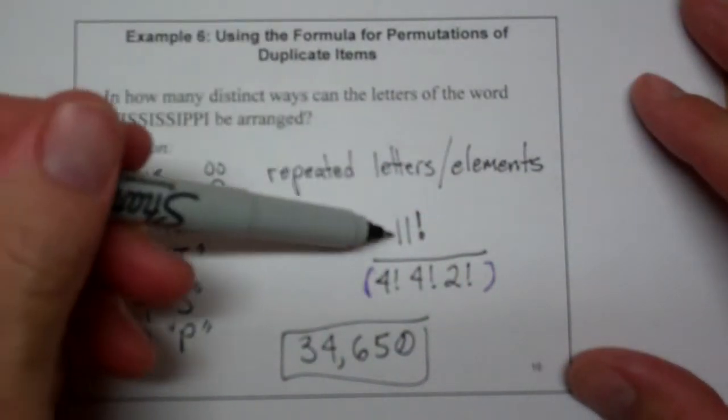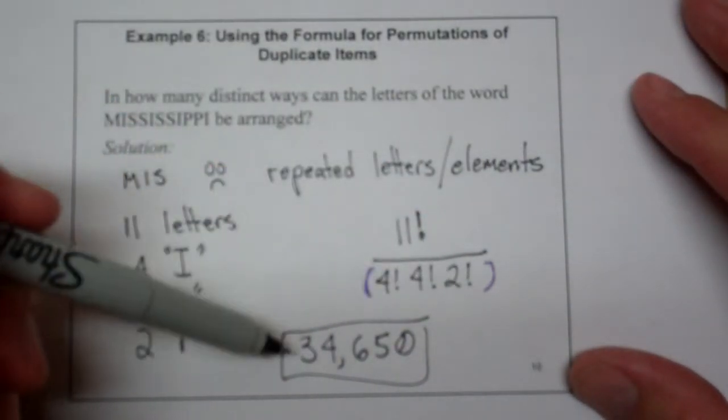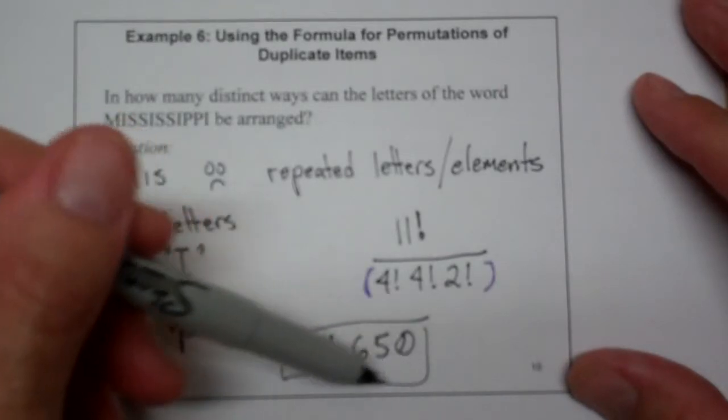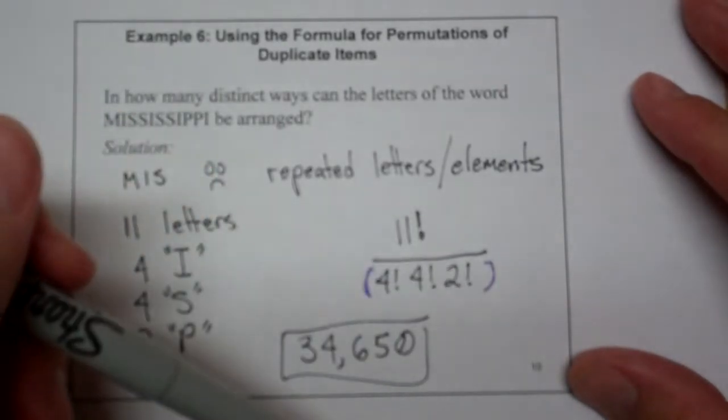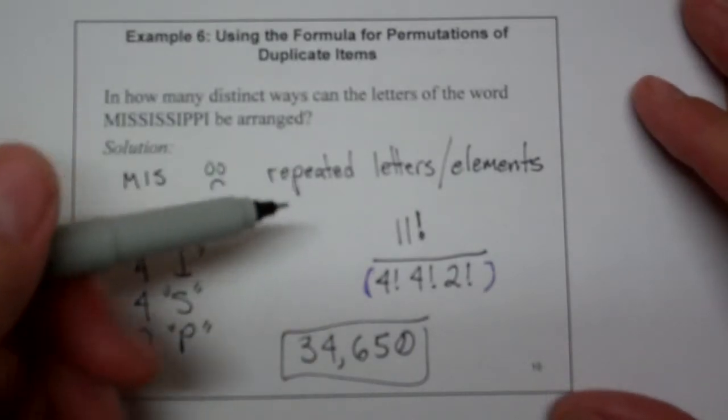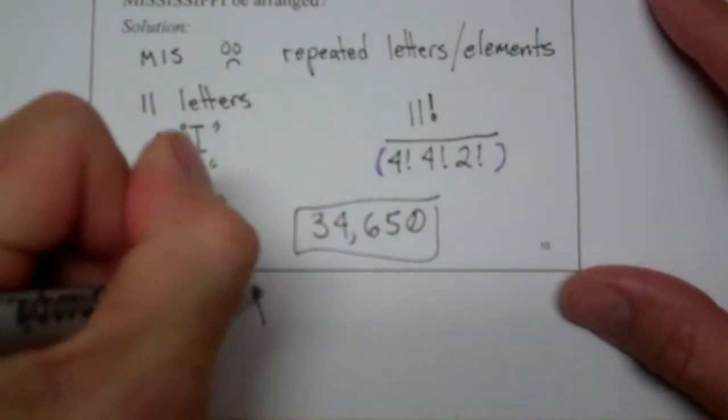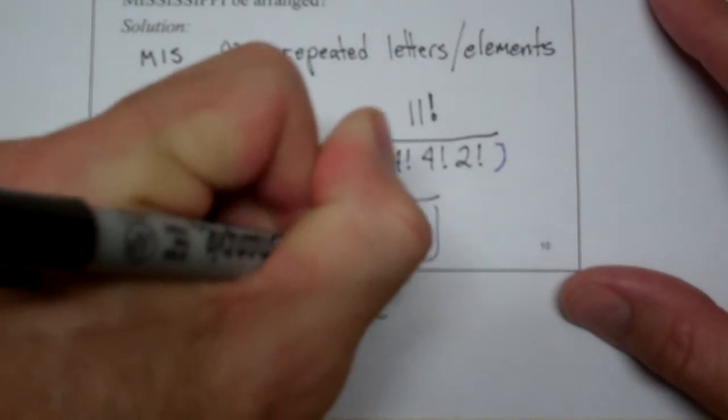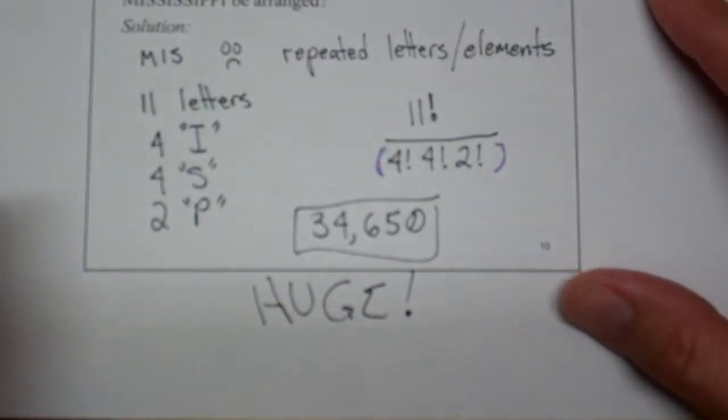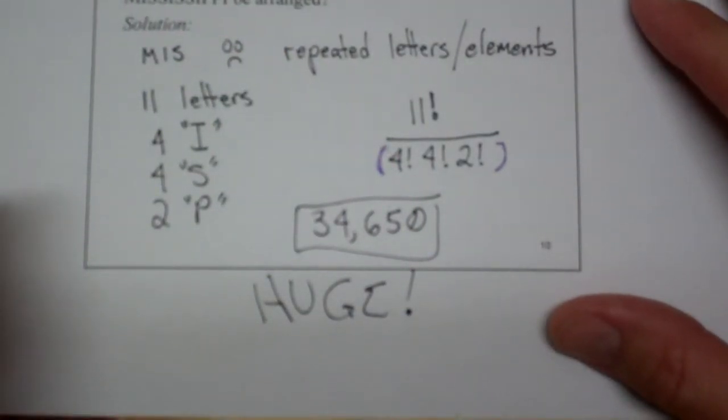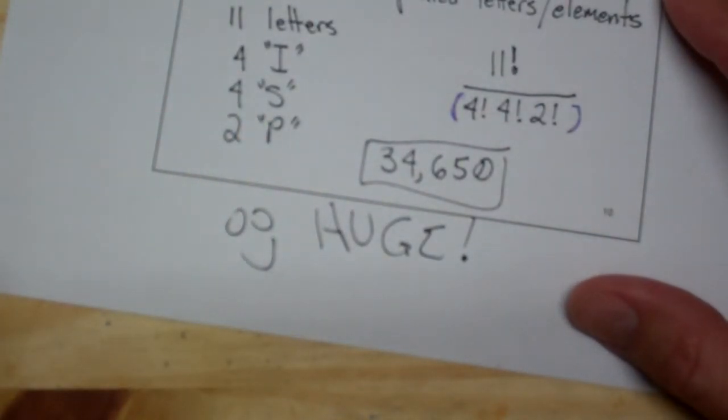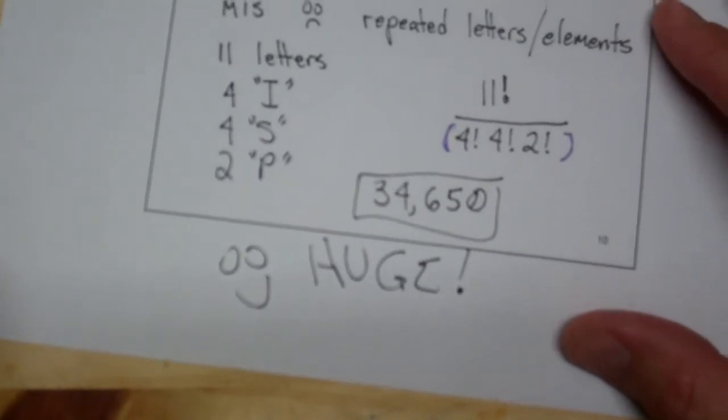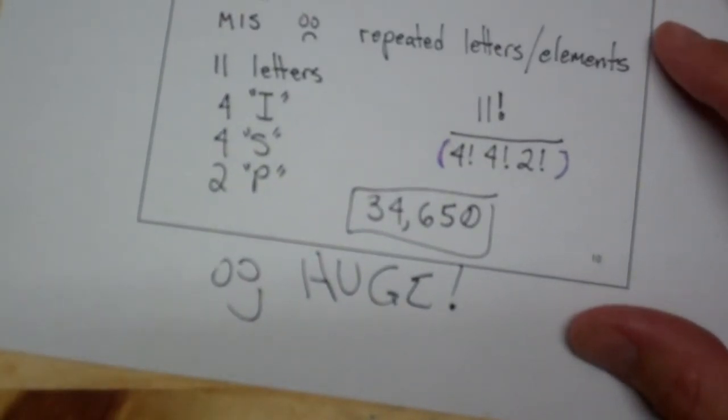Now again, because it's eleven letters even though I have a bunch of duplicates I still end up with a huge number of possibilities. And that's because of the factorial. The way that the factorial grows is huge. And so you get a big number and that's not uncommon. Well that completes our factorial. That makes us very happy on our permutations. Now we're going to start talking about combinations and the differences between them in the next video.